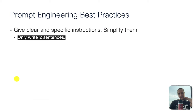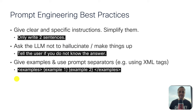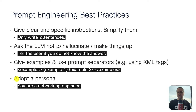For example, it's very important to give clear and specific instructions — really simplify them. Like 'only write two sentences, dear LLM.' Sometimes it also helps to ask the LLM not to hallucinate or make things up — for example, 'if you don't know the answer, just tell the user you don't know.' Another cool thing is to give examples and use prompt separators, which you can check in the LLM documentation. Sometimes I use XML tags, sometimes hashtags, as the documentation suggests. And finally, adopt a persona — like 'you're a network engineer.' It's important to set a base for the LLM: if it's more technical, say network engineer; if it's more finance, go with financial advisor.